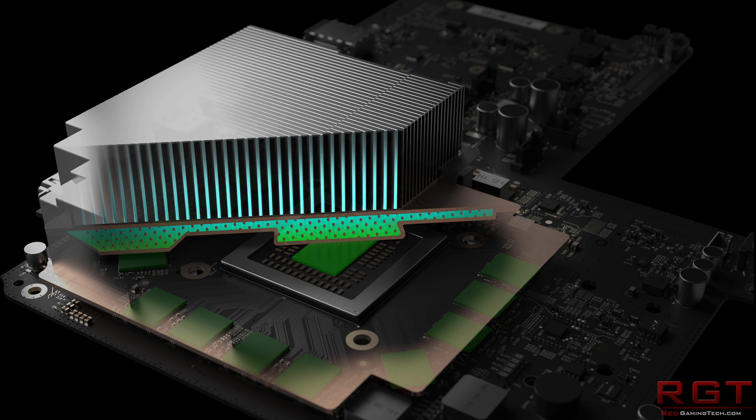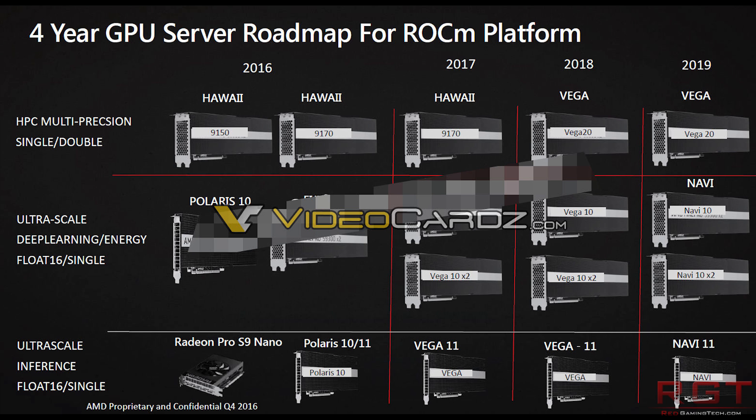Finally, Vega 10 also supports eight independent work threads, which basically means the GPU is better at handling multi-threading. Things get a little stickier when we're dealing with how Vega stacks up, and also Vega 11 — frankly, we know very little about Vega 11.